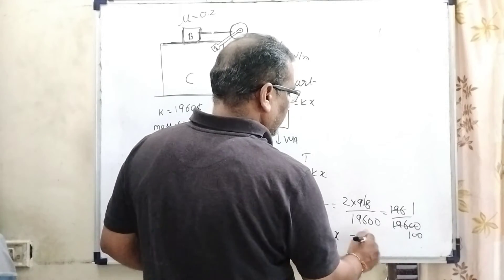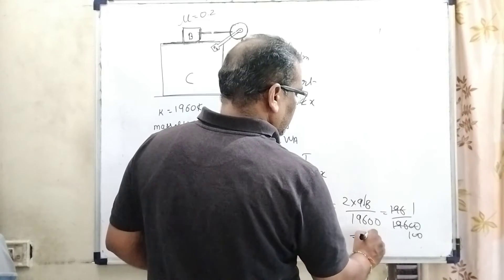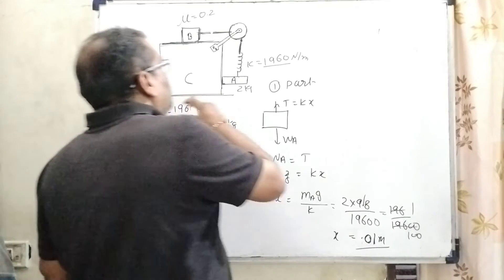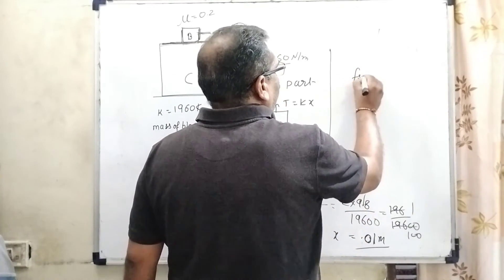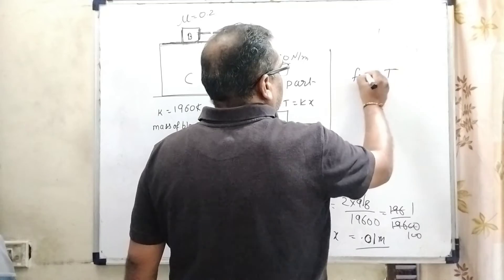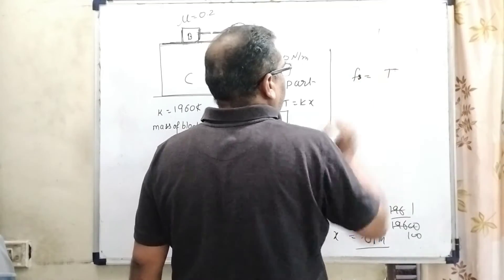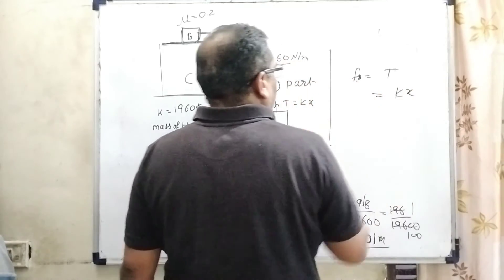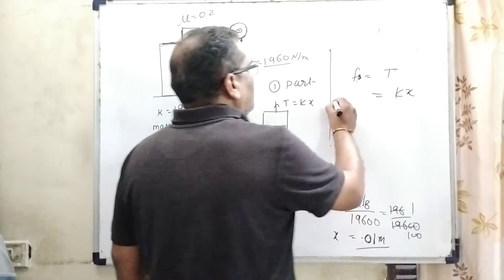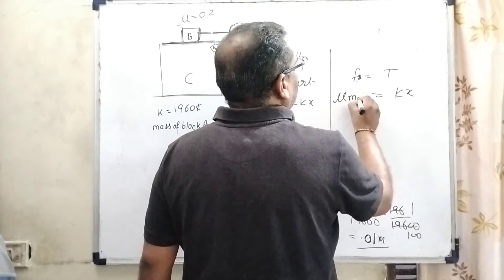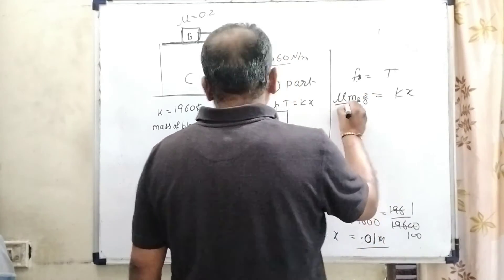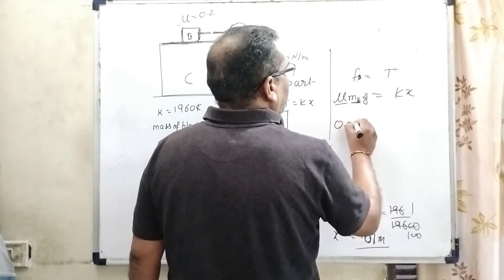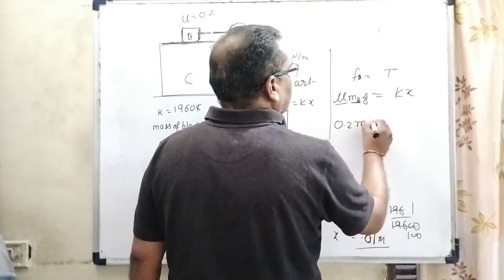Now for block B, you know that friction force Fs equals tension force T equals Kx. And this Fs equals mu times mB times g. Mu is given, that is 0.2, mB is unknown, g is 9.8, and K is 1960, and x is 0.01.